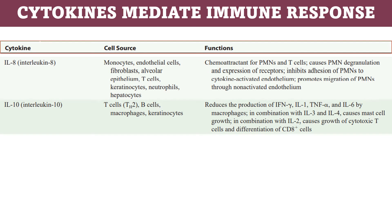Interleukin-8 arises from monocytes and many other cells. It functions as a chemoattractant for PMNs and T cells, causes PMN degranulation and expression of receptors, inhibits adhesion of PMNs to cytokine-activated endothelium, and promotes migration of PMNs through non-activated endothelial cells. Interleukin-10 arises from B cells and macrophages. Keratinocytes reduce the production of IL-1, TNF-alpha, and IL-6 by macrophages. In combination with IL-3 and IL-4, it causes mast cell growth; in combination with IL-2, it causes growth of cytotoxic T cells and differentiation of CD8+ T cells.